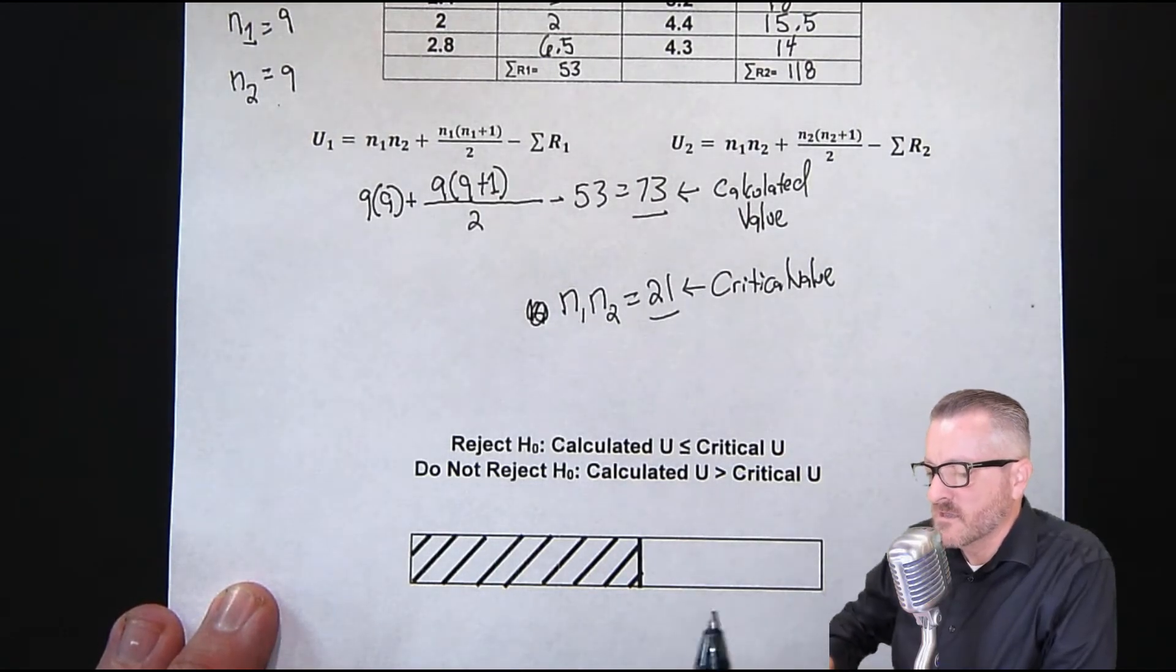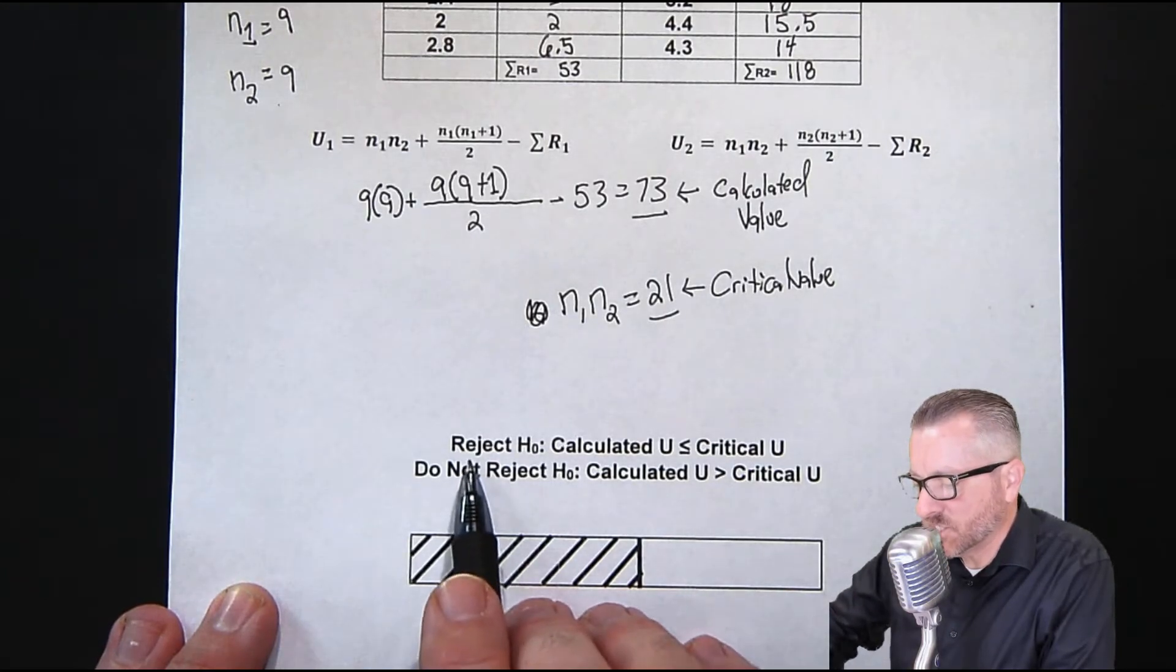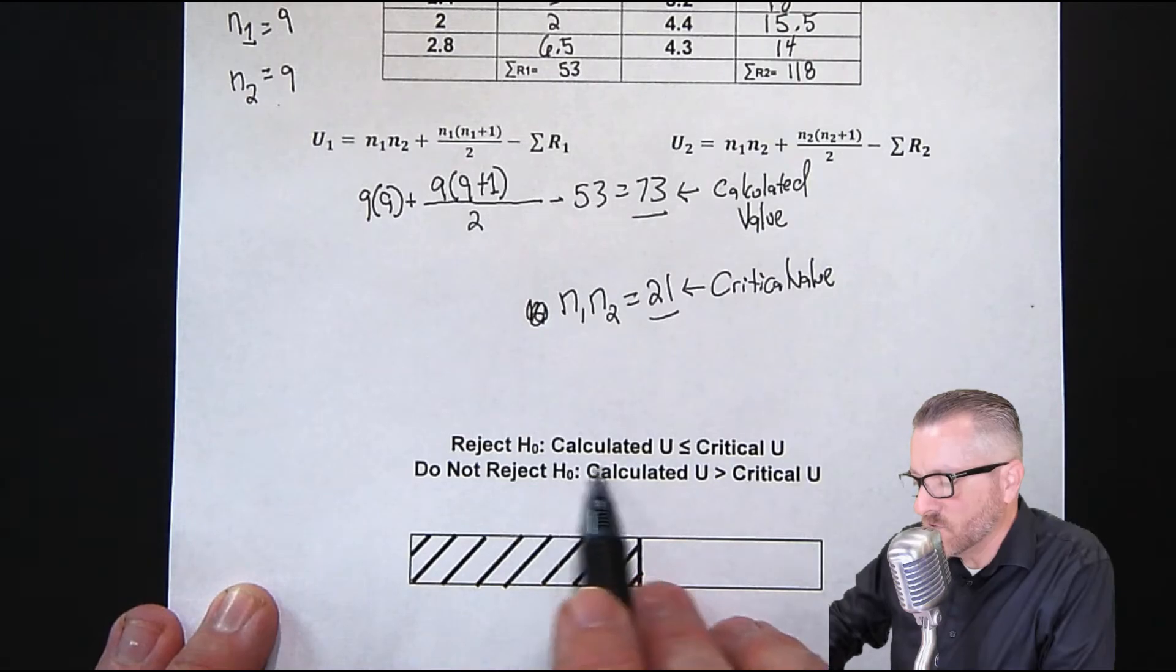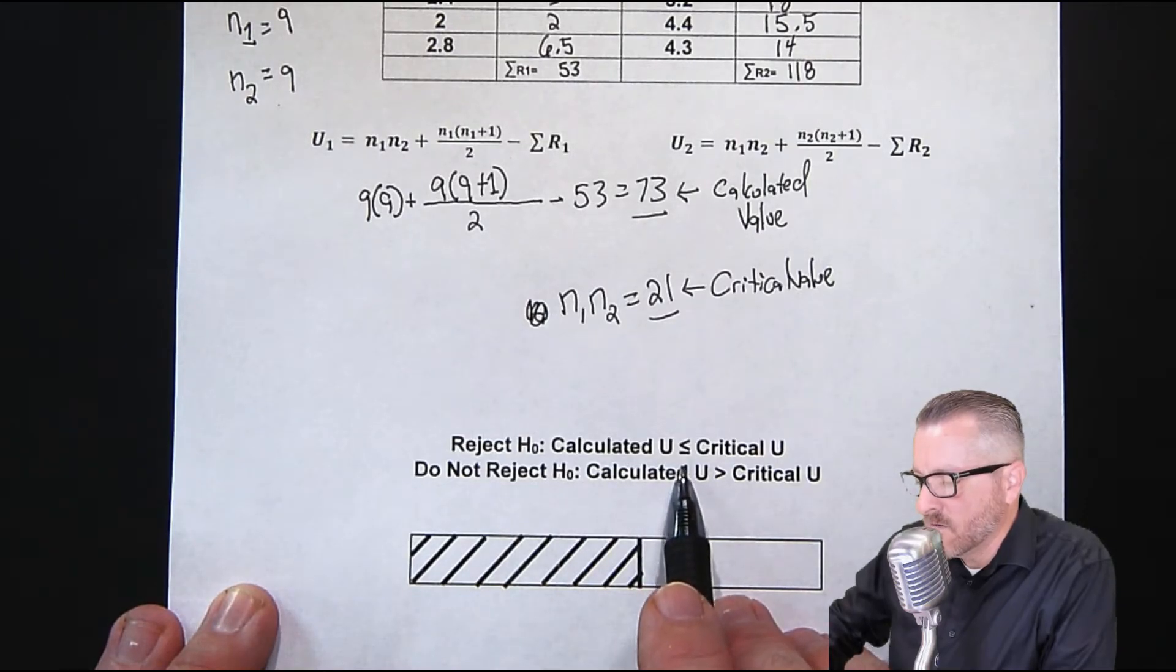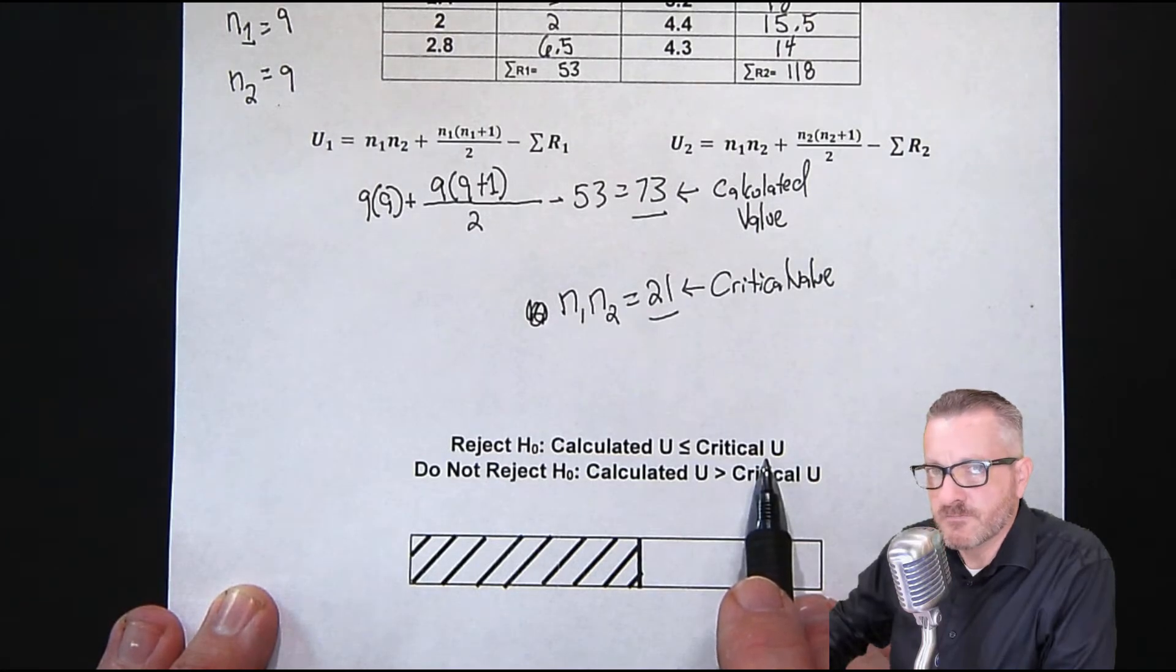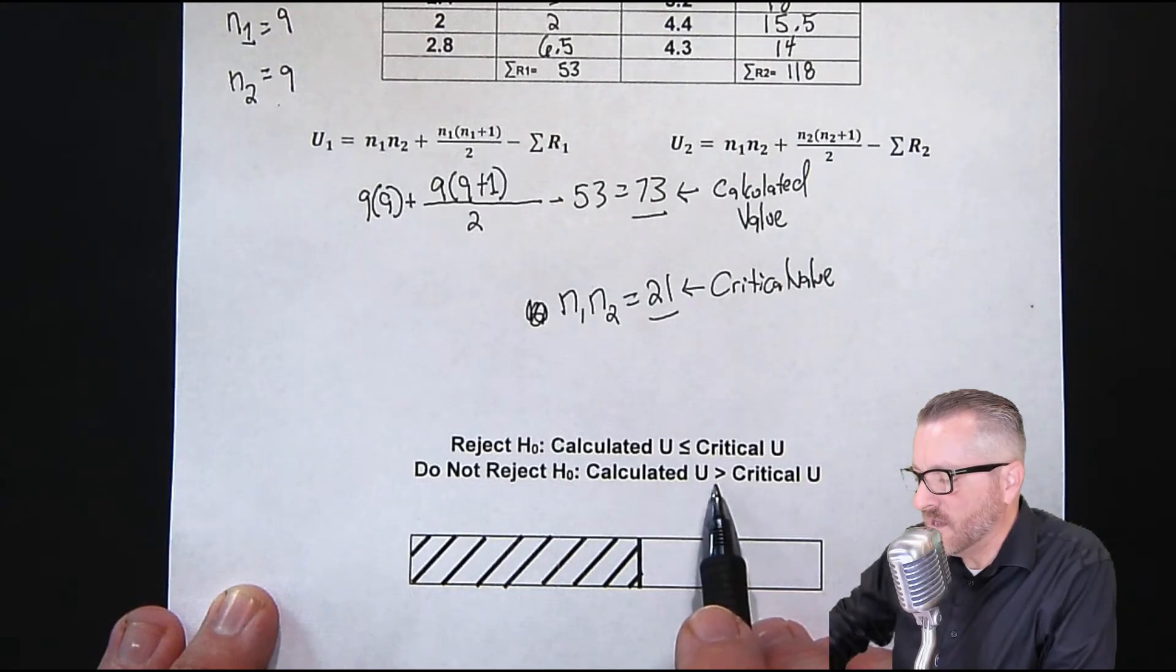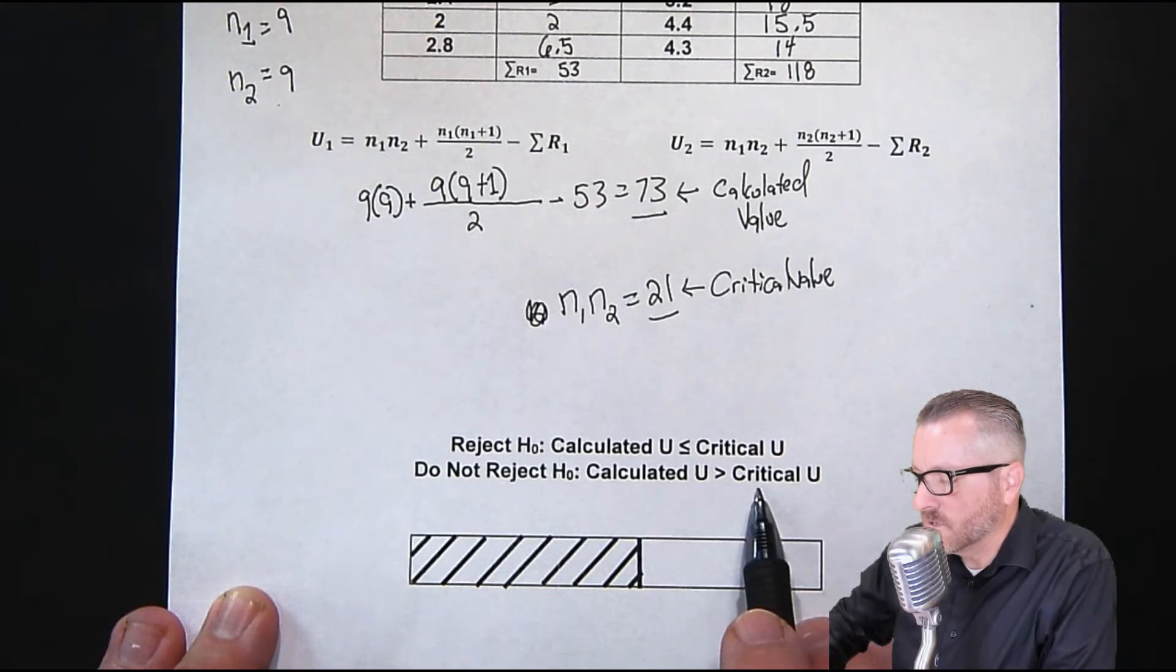The other thing is, this is different in the way that we reject or do not reject, and so I have it listed right here. Here it says, reject H0, calculated U is less than or equal to critical U. So this is our decision-making, and then do not reject H0 if the calculated U is larger than the critical U.